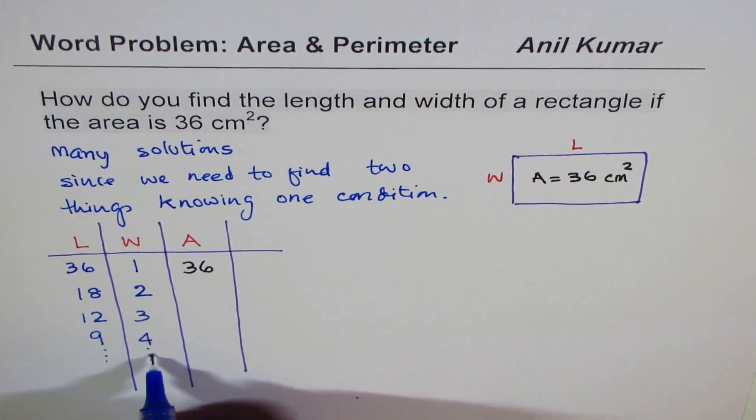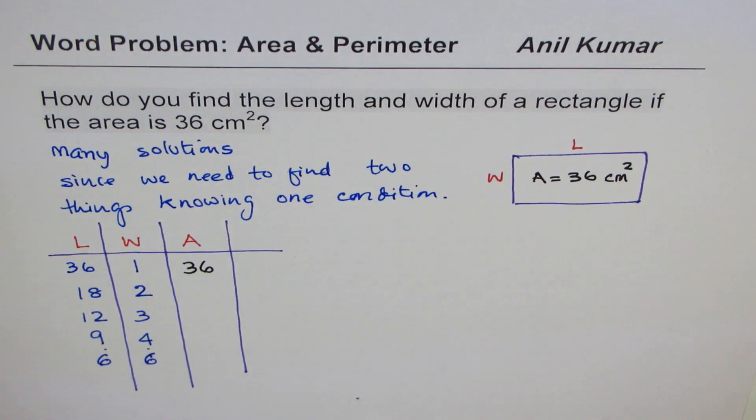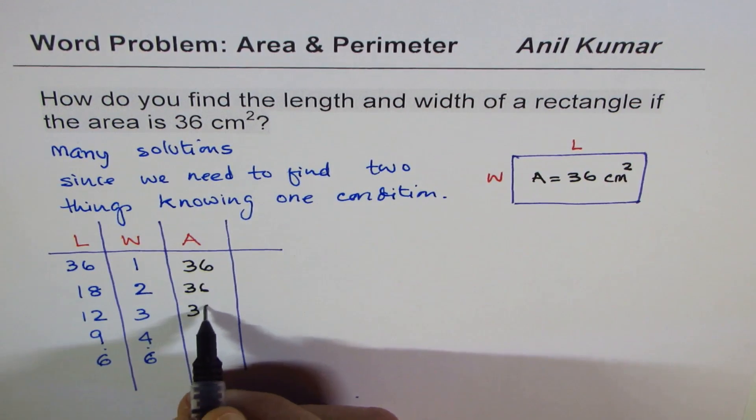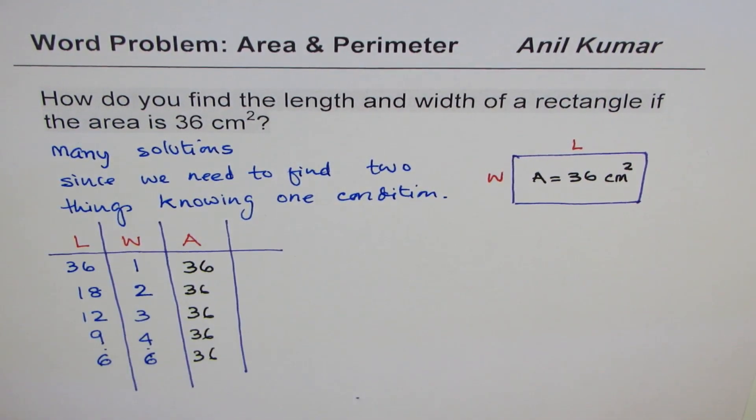If I take 6, then it is 6 times 6 as 36. So all these values will give me 36 as the area, as you can see. So there are so many different possibilities to find length and width combination.